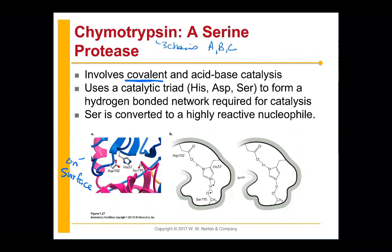What you're going to see specifically in chymotrypsin — but this is really common in all serine proteases — is that they're going to have this catalytic triad. This triad is histidine, asparagine, and serine, and they're going to form a hydrogen bond network that allows catalysis to happen. In this triad, the serine itself is going to be converted to a highly reactive nucleophile.